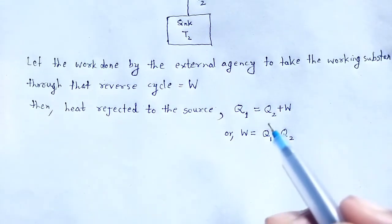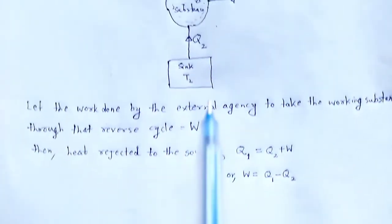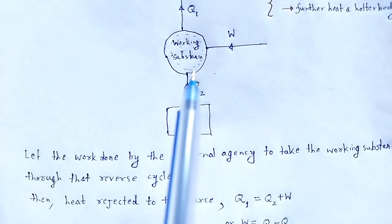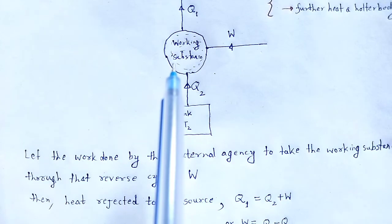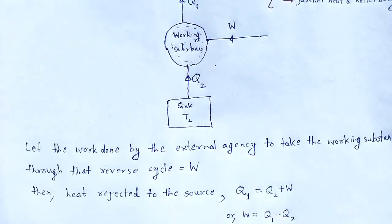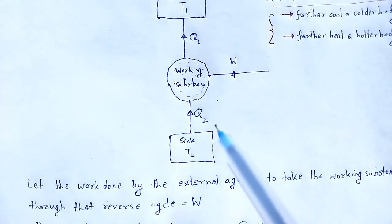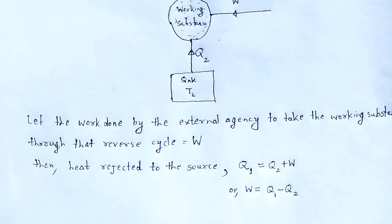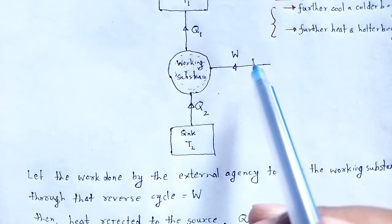Since the working substance works in a cyclic process, there is no change in its internal energy. It is necessary that some external work must be done on the working substance, which is in accordance with the second law of thermodynamics. In the case of a refrigerator, the work is done by an electric motor.